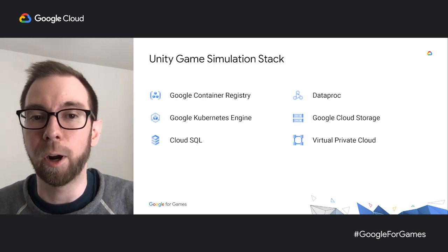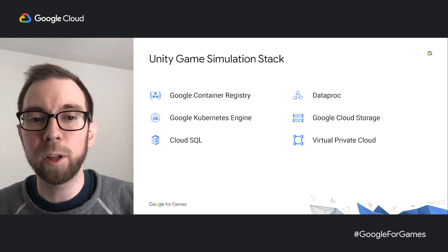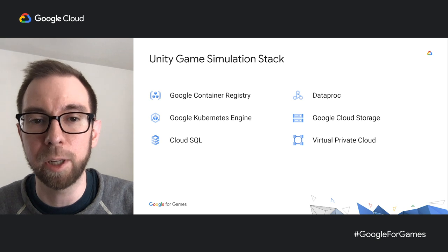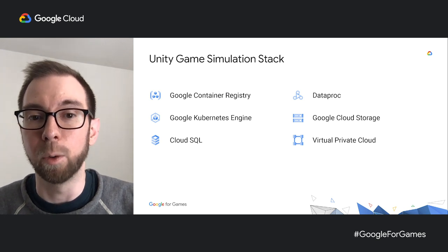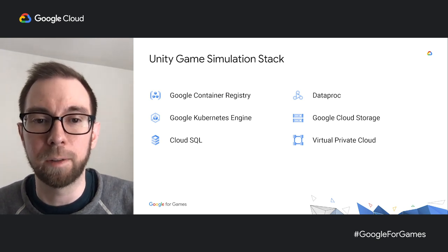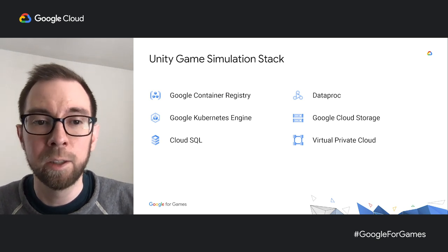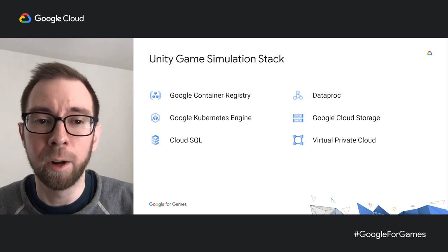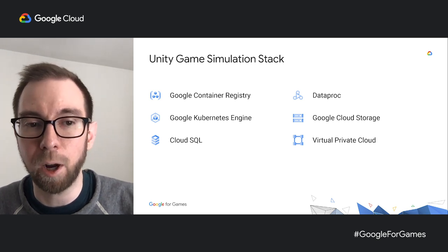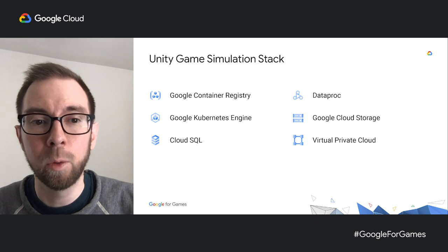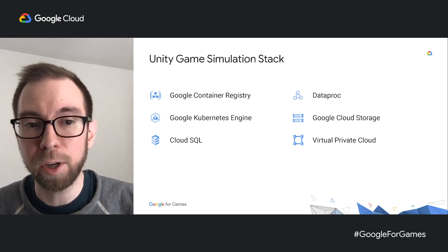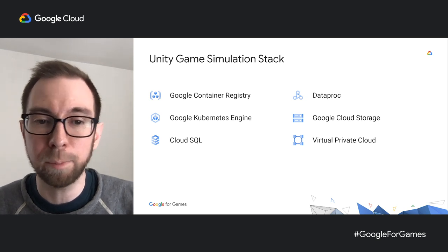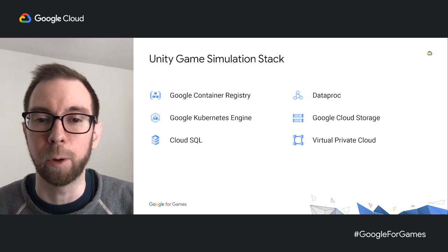In addition to GKE and other products we mentioned, I'd like to quickly cover some other tools we found very useful in the development of Unity game simulation. First is Cloud SQL, which we're using as the database for our services that manage our job state and orchestration. Second is GCR, which we're using along with IAM for securely managing all of our Docker containers. We also use Dataproc for handling the aggregation of our simulation data from each of the individual simulation instances. And finally, Terraform, which helps us manage all the GCP infrastructure that we have.